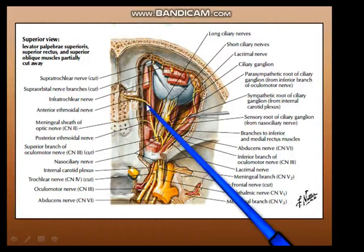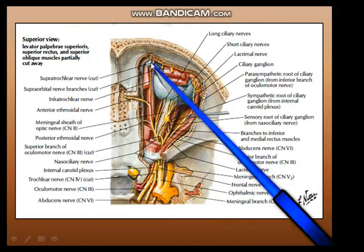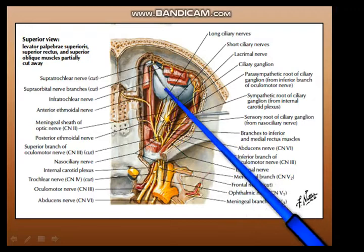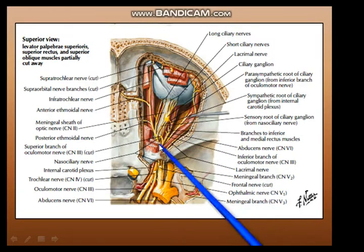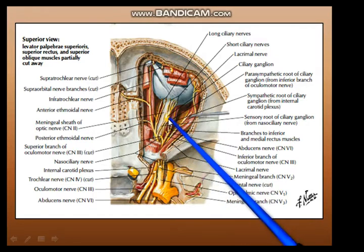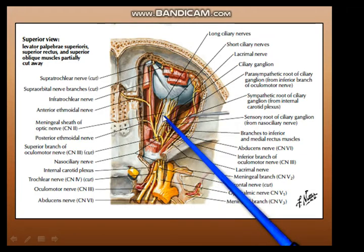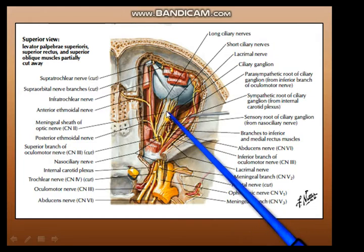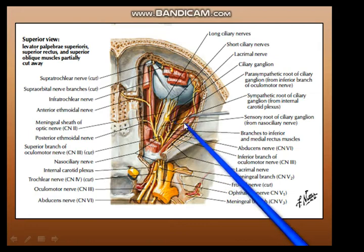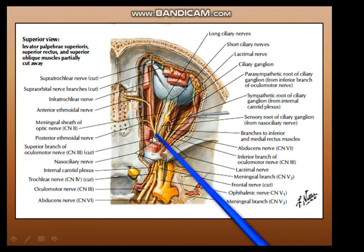The nasociliary nerve gives the anterior ethmoidal nerve, the posterior ethmoidal nerve, and continues anteriorly to end as the infratrochlear nerve. Along the way, the nasociliary nerve supports the ciliary ganglion, which is positioned between the optic nerve and the lateral rectus. The nasociliary nerve also gives a few long ciliary branches — the long ciliary nerves.